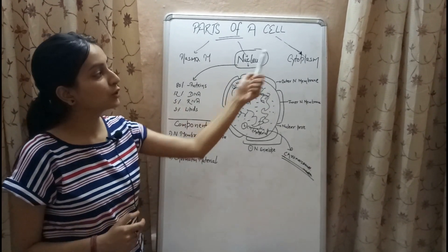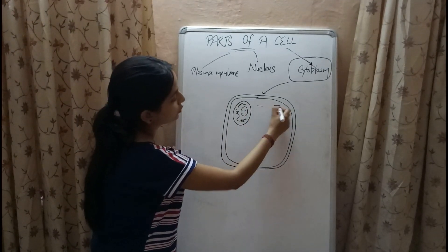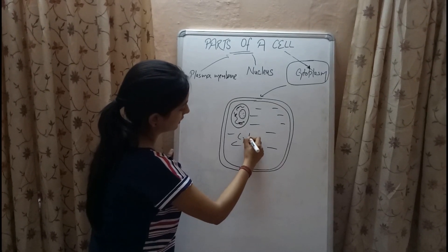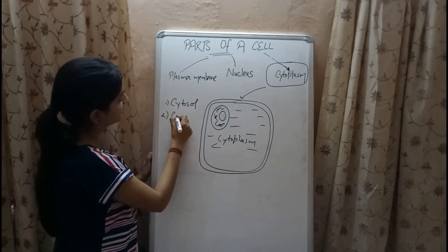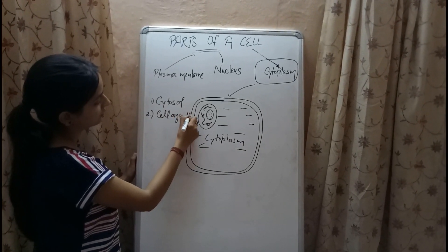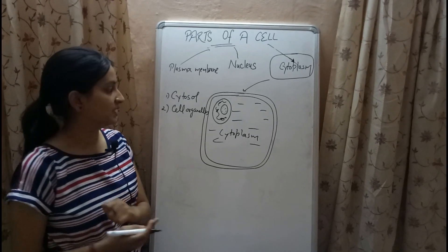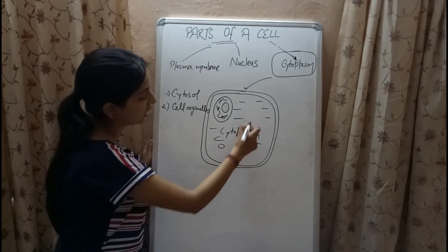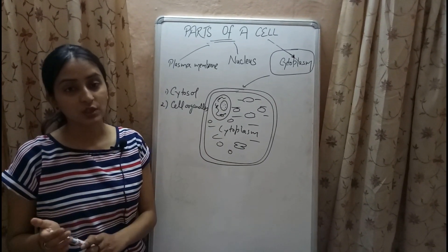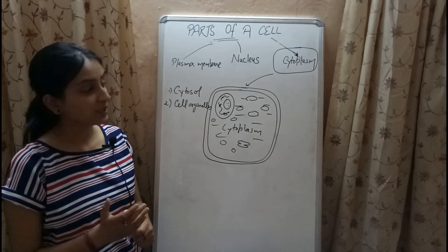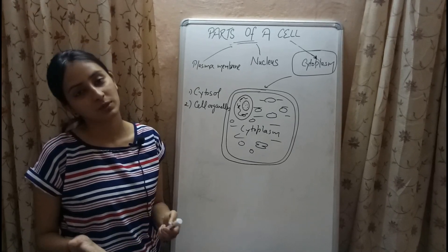Now let's move on to the last part — cytoplasm. Cytoplasm is the protoplasmic content of the cell within the plasma membrane, excluding the nucleus. It consists of two major parts: cytosol and cell organelles. The fluid part of cytoplasm is known as cytosol, consisting of various enzymes, ions, amino acids, lipids, and proteins. Cell organelles are the sub-microscopic structures present in the cytoplasm. Cytoplasm is the site for various biochemical processes like glycolysis, is responsible for exchange of materials between cell organelles, and helps in protein synthesis.